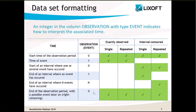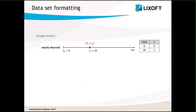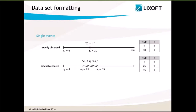Let's look at some examples, starting with single events. In the first example, an exactly observed event is represented for some individual with two rows: the start of the observation period, which is zero, and the time of the event, 30. In the second example, the event is interval-censored, so we only know it occurred between times 25 and 35. Note that it is not possible to combine exactly observed events and interval-censored events in the same dataset.